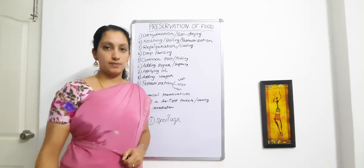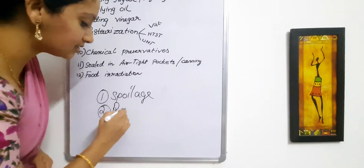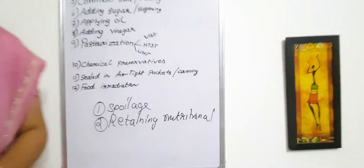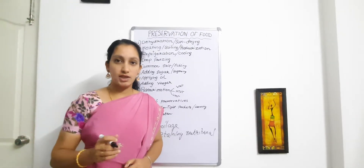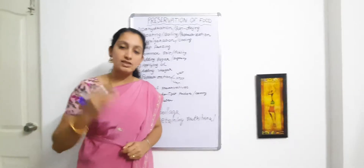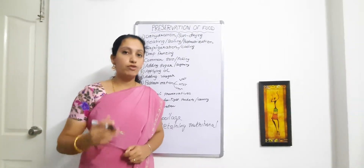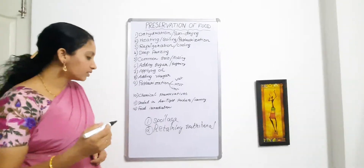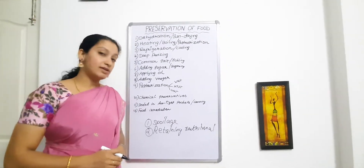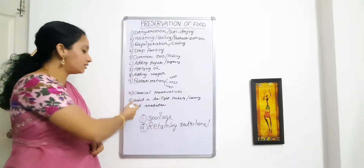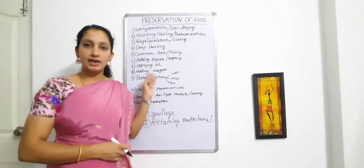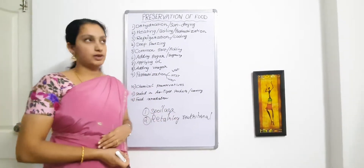So we have two key goals. The first is preventing the deterioration or spoilage of food caused by microorganisms. The second is retaining the nutritional value of food — the nutrients present in food and how much of each nutrient is retained, without being affected by the growth of microorganisms. Depending on the type of food, the method or technique we follow will be different.